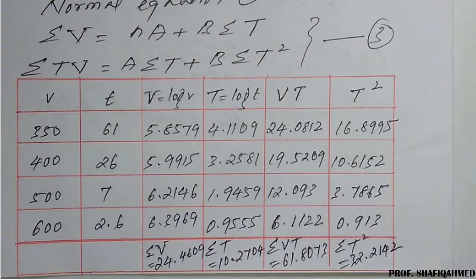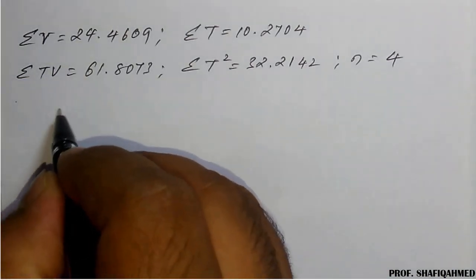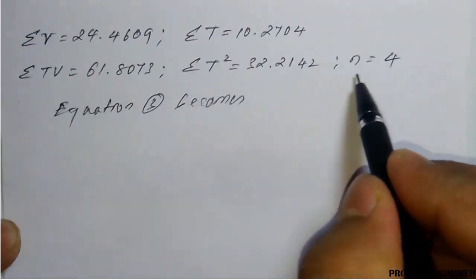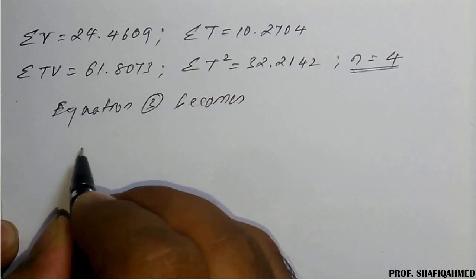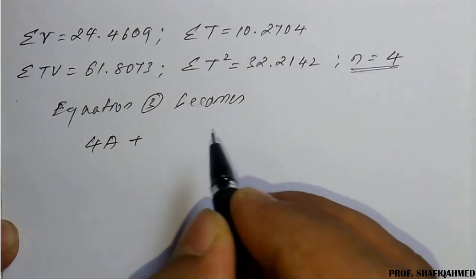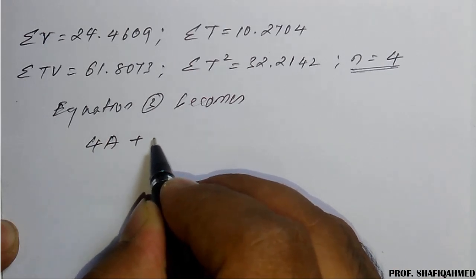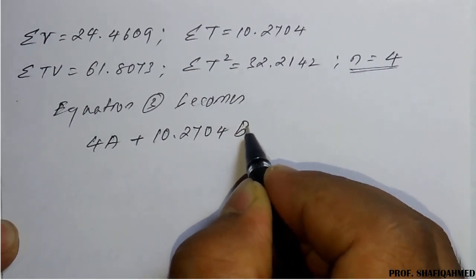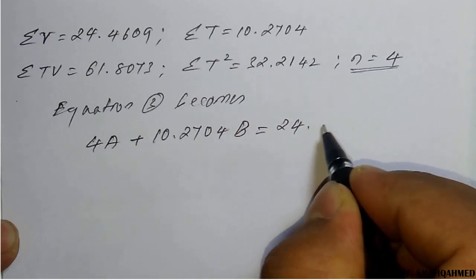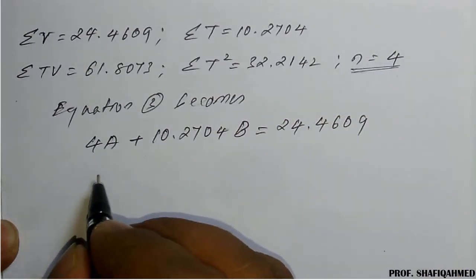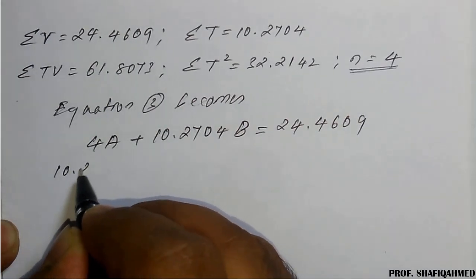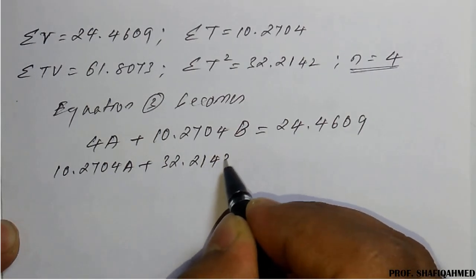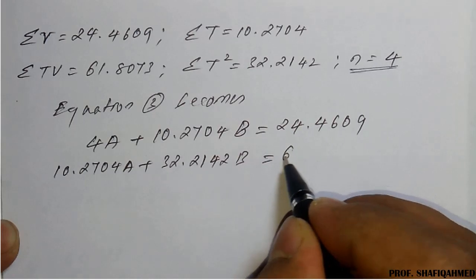With N = 4, the normal equations become: 4A + 10.2704B = 24.4609, and 10.2704A + 32.2142B = 61.8073. These two simultaneous equations need to be solved for A and B.